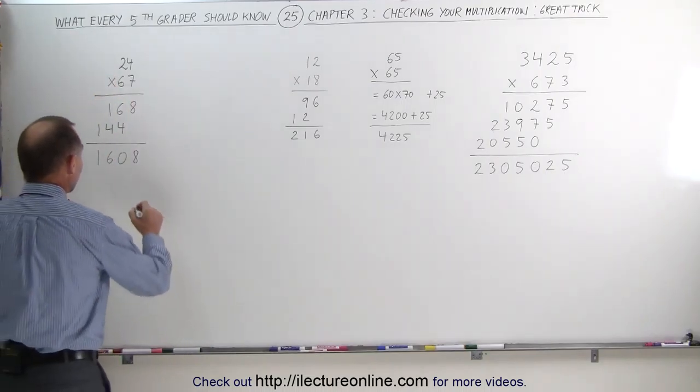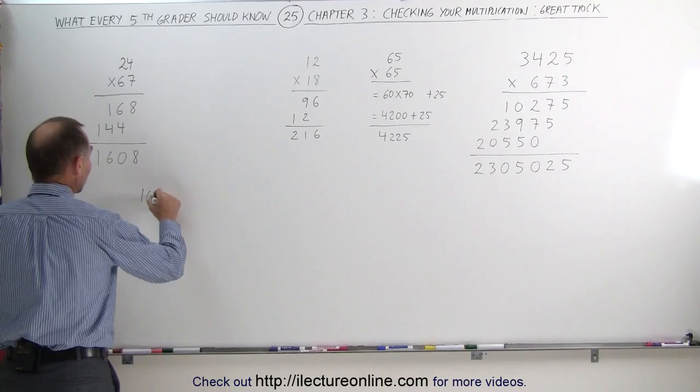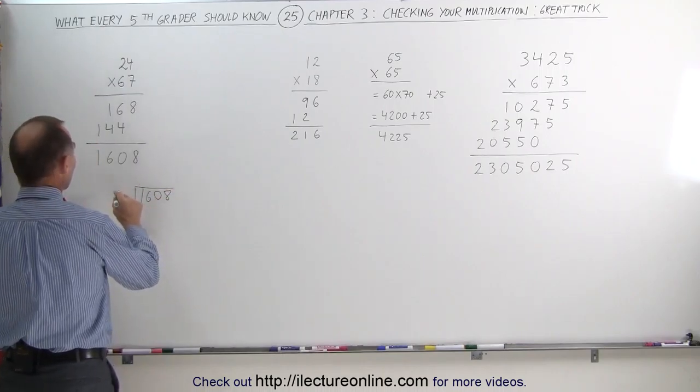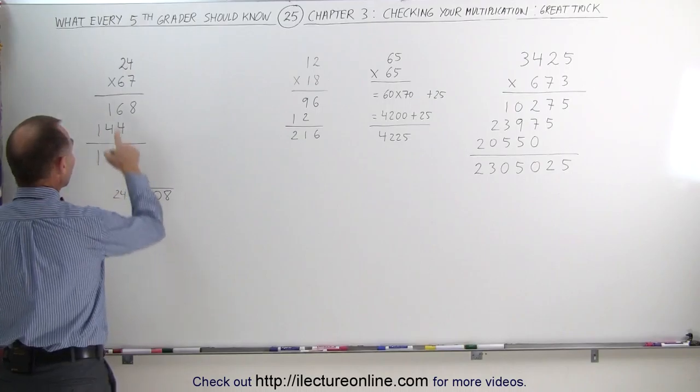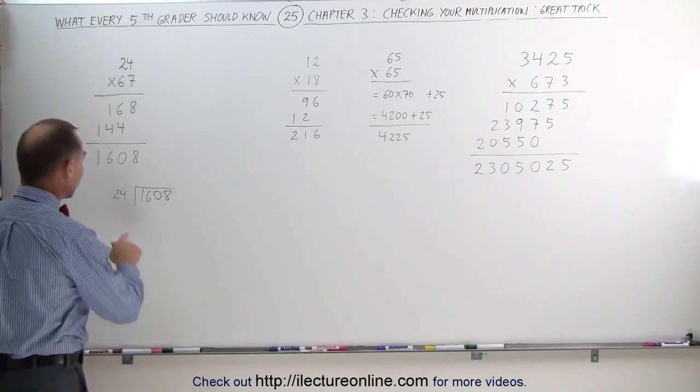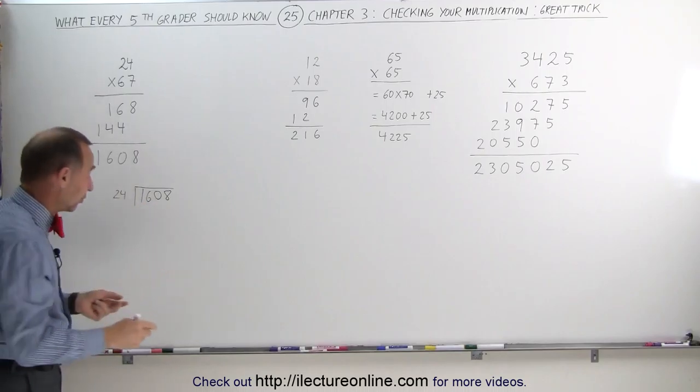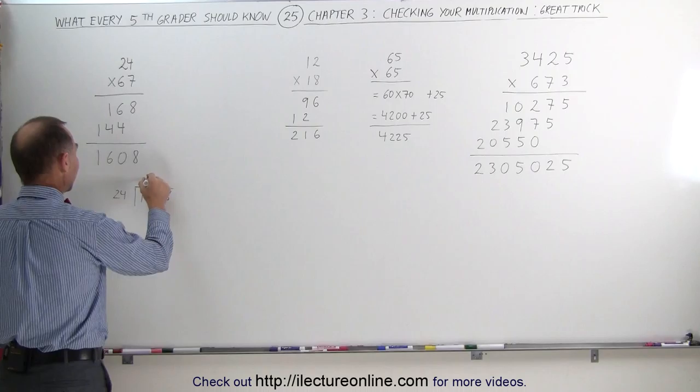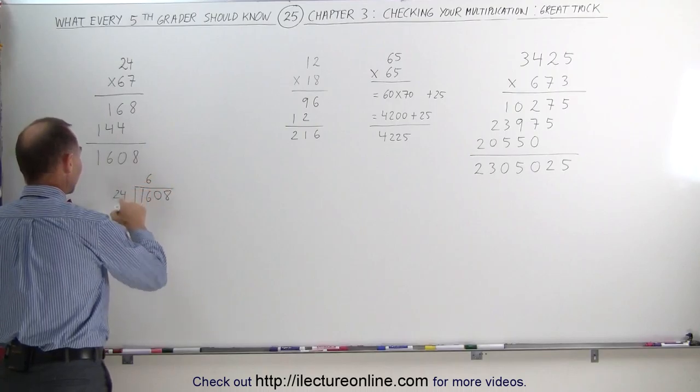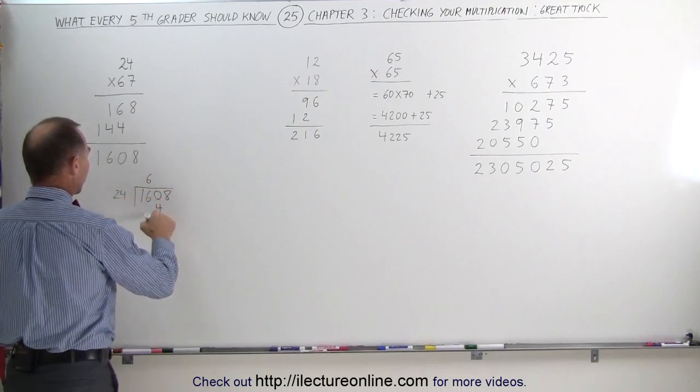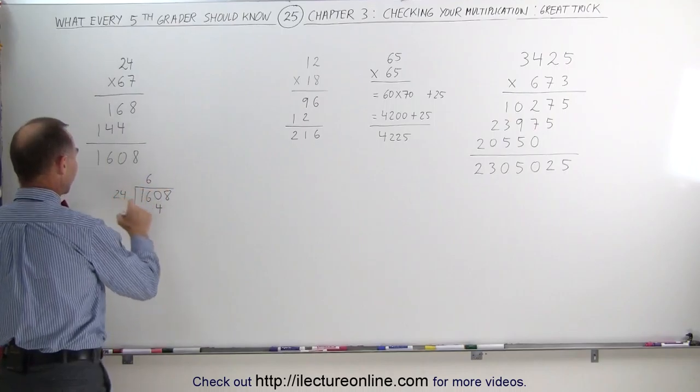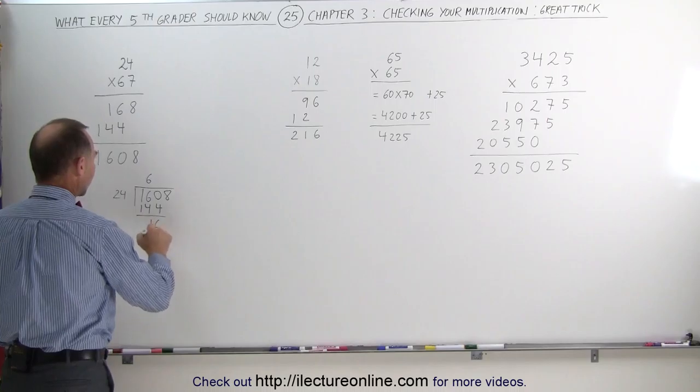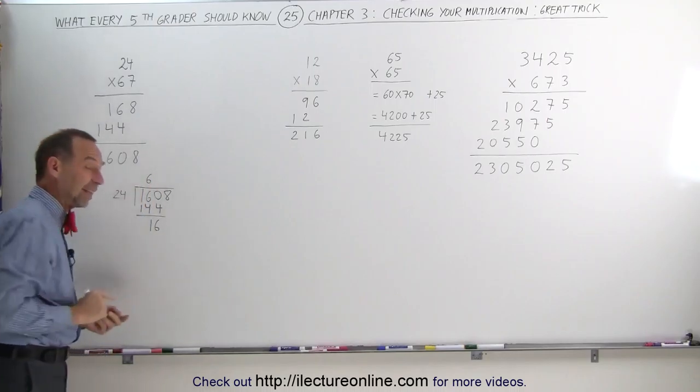For example, they would take the number 1,608, which is the result of the multiplication, and then they would try to divide it by the number 24 to see if they would get 67. So they go, 24 goes into 16, well it doesn't go, so now they take one more number. 24 goes into 160, they would guess maybe 6 times. 6 times 4 is 24, write down the 4, remember the 2. 6 times 2 is 12, plus 2 is 14, and when you subtract remainder 16, which is less than 24, that's the correct number.